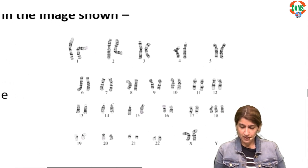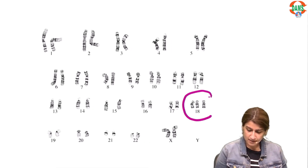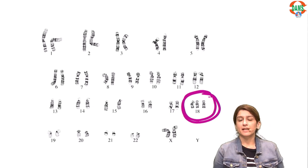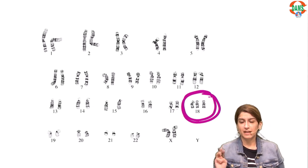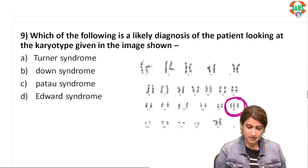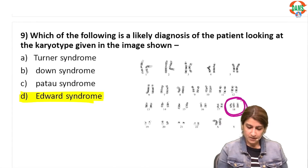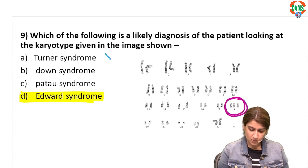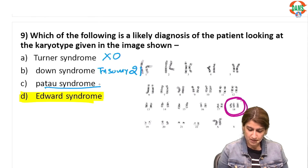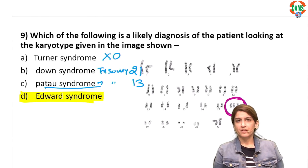A karyotype is given and a diagnosis is asked. Looking at the karyotype, there is trisomy 18 — three copies of chromosome 18 — which is called Edwards syndrome. Turner syndrome is monosomy X, Down syndrome is trisomy 21, and Patau syndrome is trisomy 13.